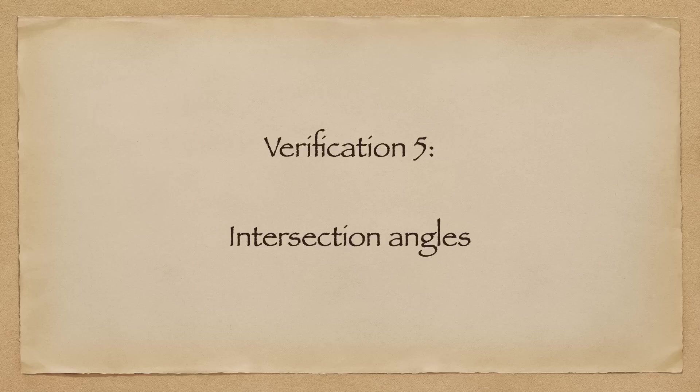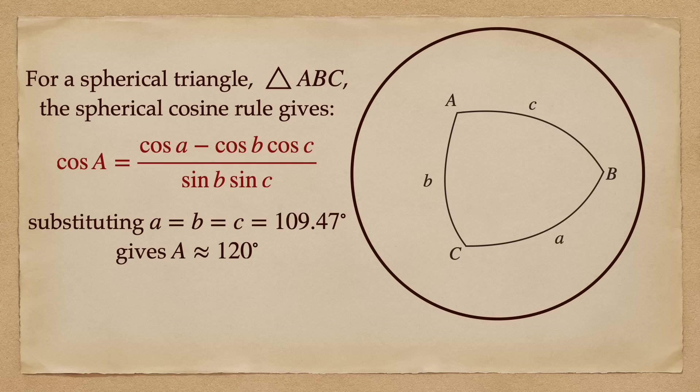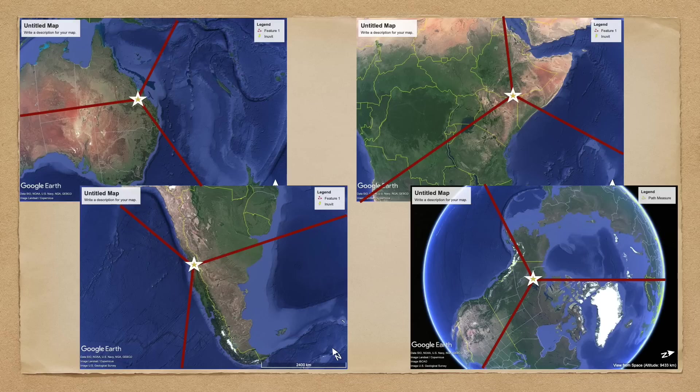Another technique available to us to verify whether or not these points are actually the vertices of a tetrahedron is to look at their angles of intersection. If we take a top-down view of a tetrahedron, so that there is a central vertex in the middle, the edges from the other vertices meet at that vertex at an angle of exactly 120 degrees. Spherical trigonometry gives us exactly the same result for any spherical triangle with sides 109.47 degrees. And when we test this using visualization or navigational software, that is exactly the result that we obtain.